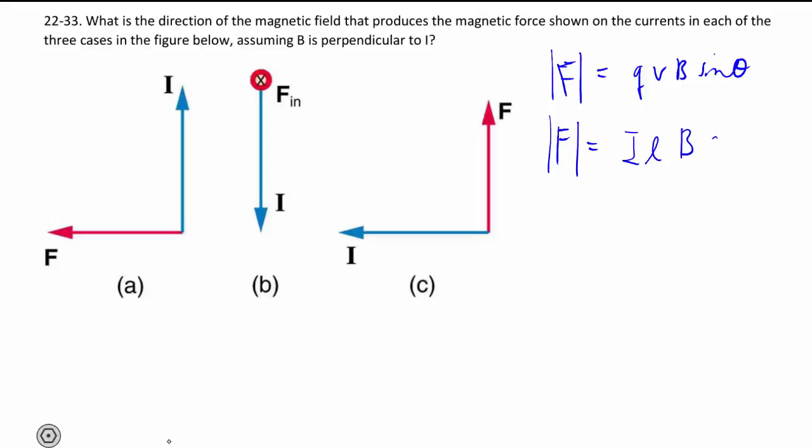So this is the current, that's the length of the wire inside the magnetic field and the angle is still there and available. So that's the size of the magnetic force.